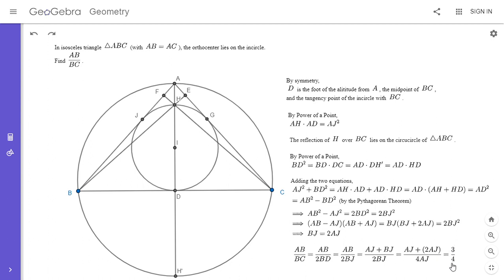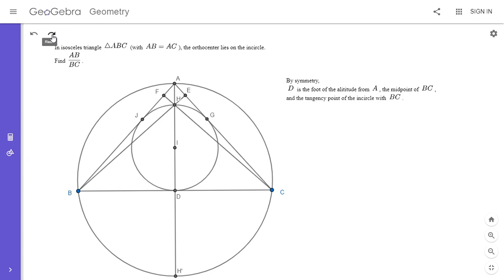Well, BC is 2BD by symmetry. And BD is the same as BJ because they're both tangents of the incircle. And AB is AJ plus BJ. And now BJ is 2AJ from the above. And we can also substitute BJ in the denominator. So 2BJ is 4AJ. And then if we simplify, we get three-fourths as the final answer. So this is my solution. I feel like I got a little bit lucky how just sort of adding these equations got everything to work out. So a little luck. But I feel like Rom's solution, which I'm going to show you next, is maybe a little more motivated.